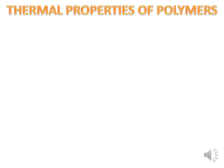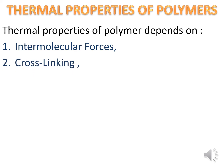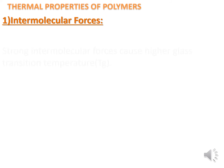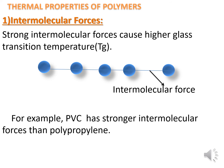Thermal properties of polymers depend on intermolecular force, cross-linking, chain stiffness, plasticizers, and molecular weight. First, intermolecular forces: strong intermolecular forces cause a higher glass transition temperature (Tg). For example, PVC (polyvinyl chloride) has stronger intermolecular forces than polypropylene because polyvinyl chloride has dipole-dipole forces between carbon and chloride bonds.